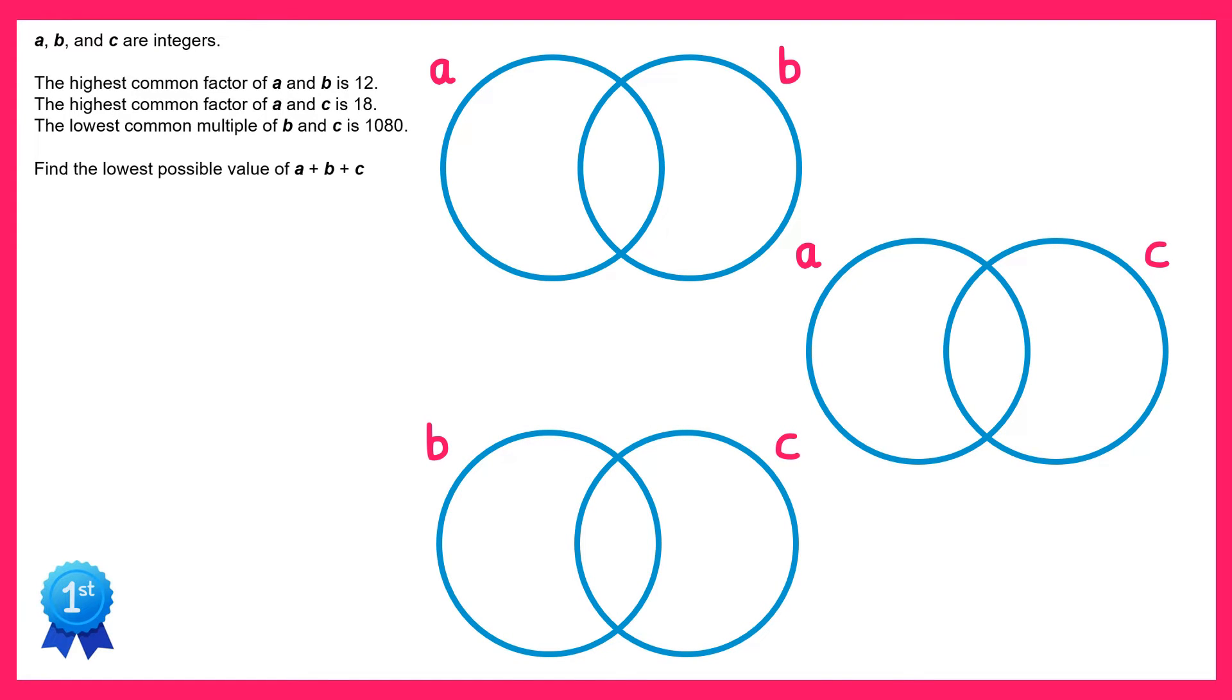Now if we read the line that says the highest common factor of A and B is 12, if we now look at the Venn diagram for A and B, 12 must be the product of the numbers that go here in the intersection. If you write 12 as the product of prime factors, it's 2 times 2 times 3, so we can place two 2's and a 3 in here.